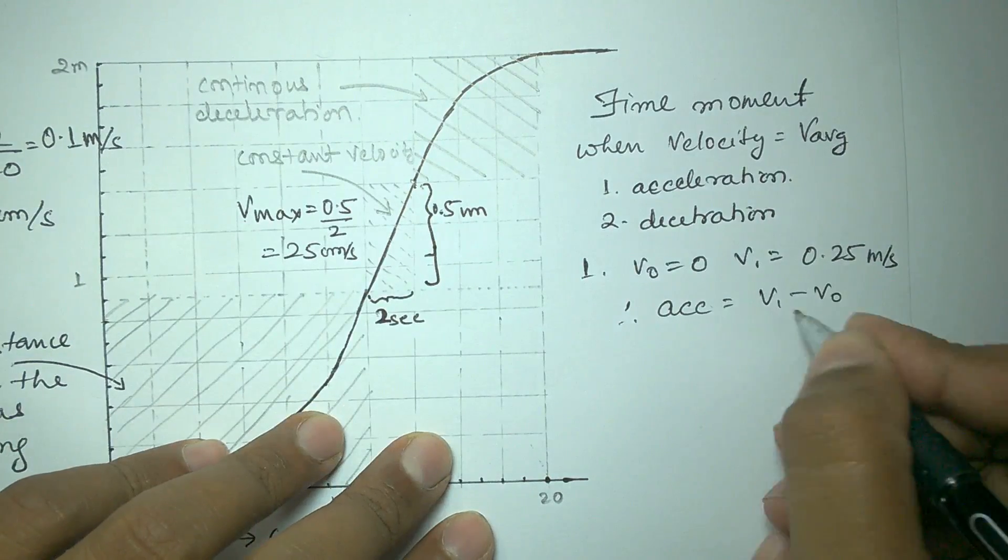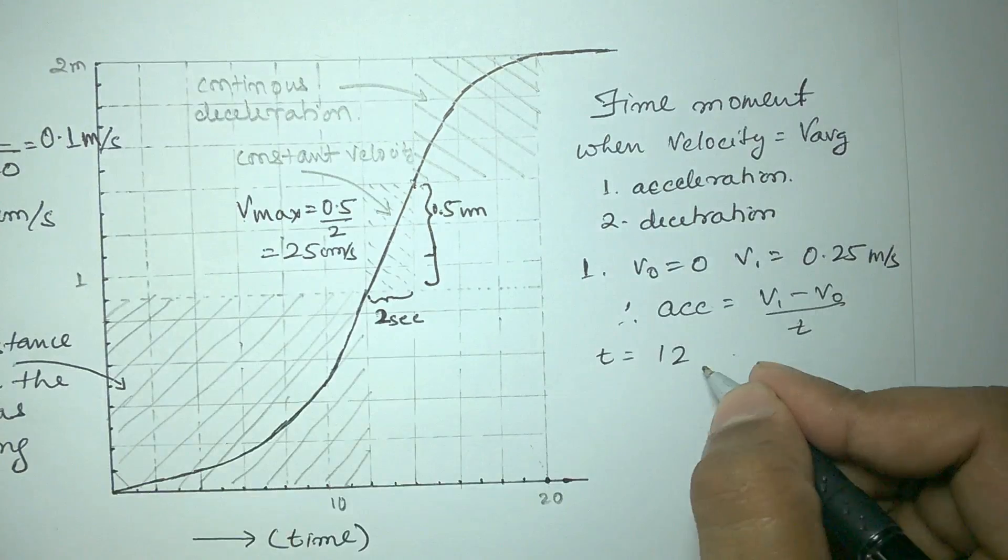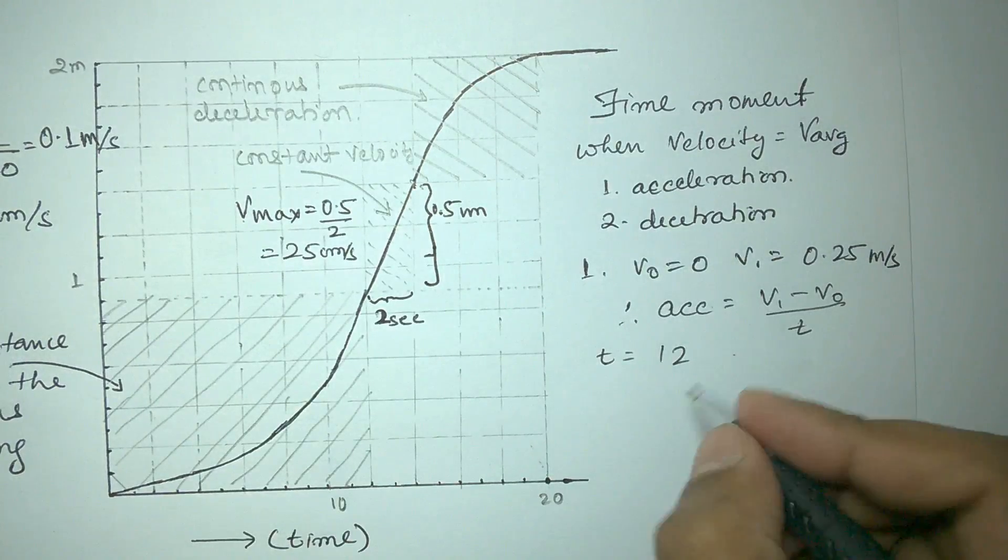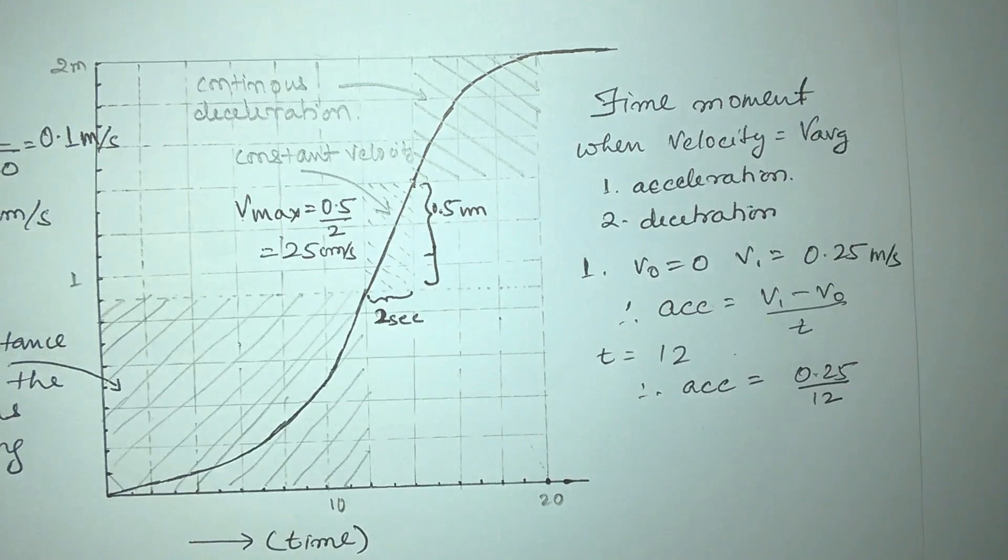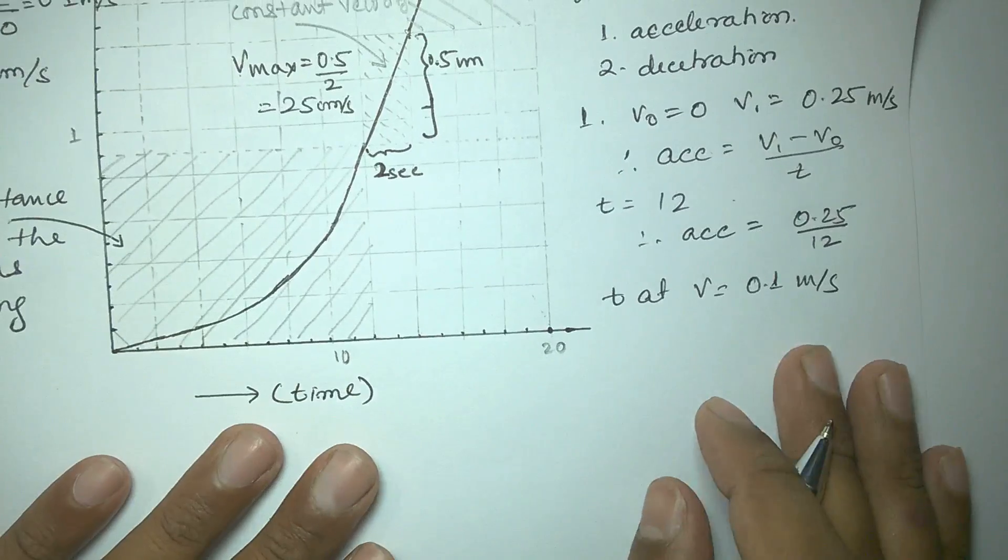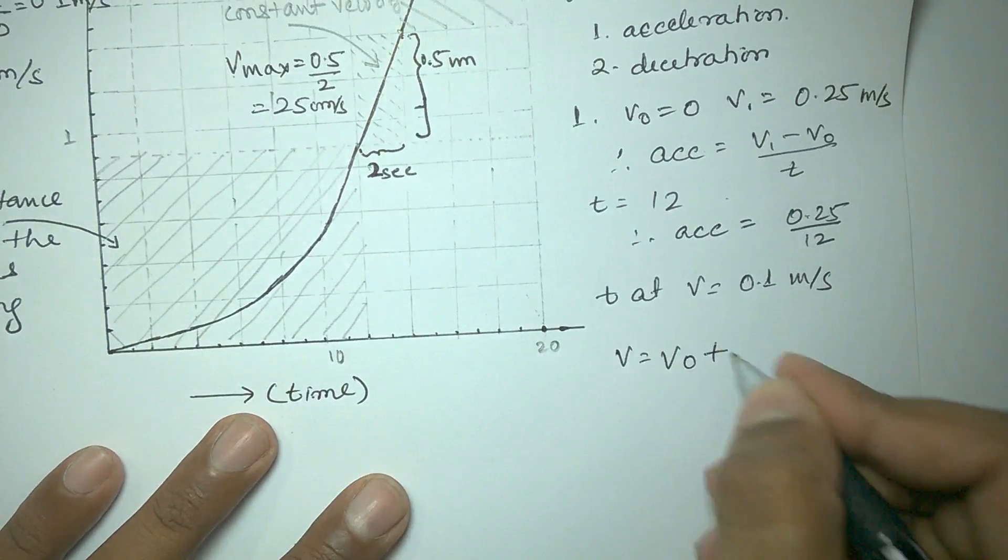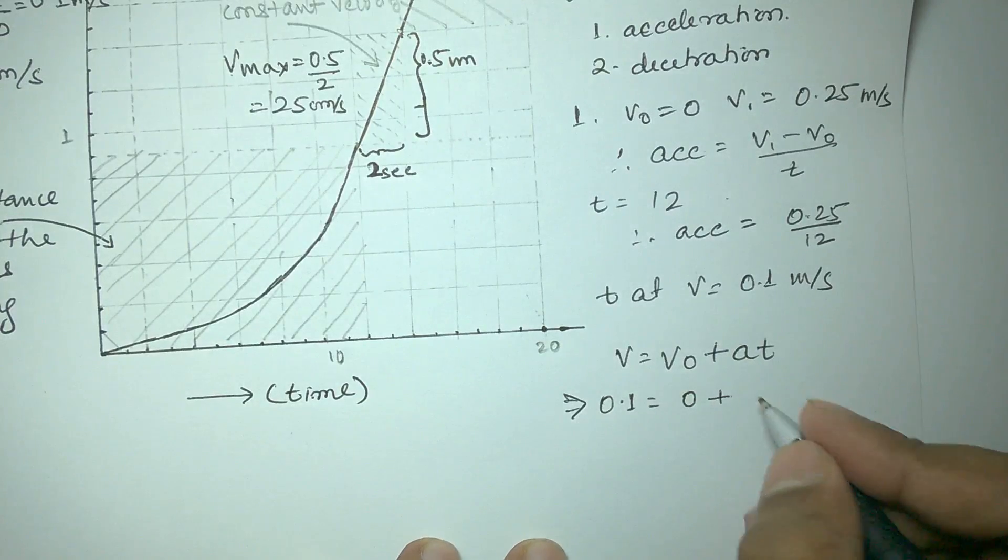Since the time taken is 12 seconds and the initial velocity was 0, the acceleration will be 0.25 per 12. To get the time moment at which the particle will be at the value of average velocity, we can simply apply the motion equation v = v0 + at.